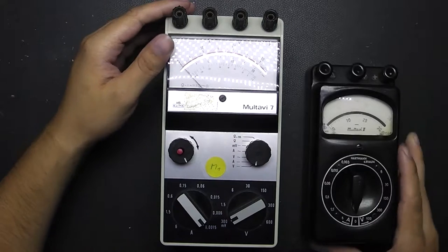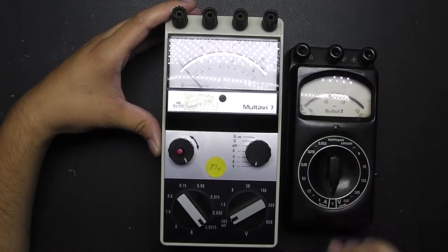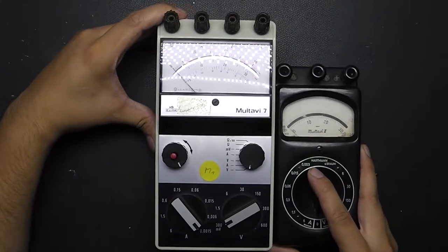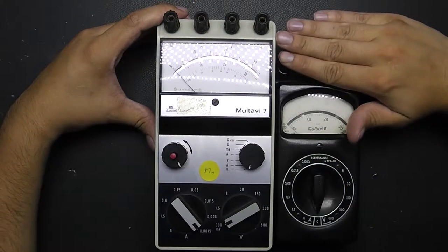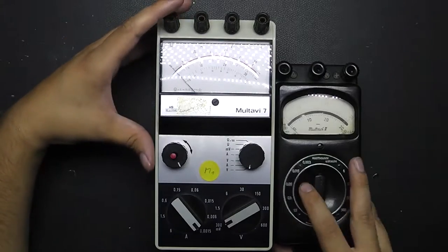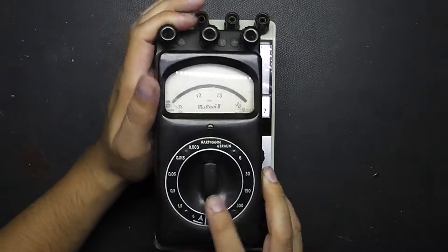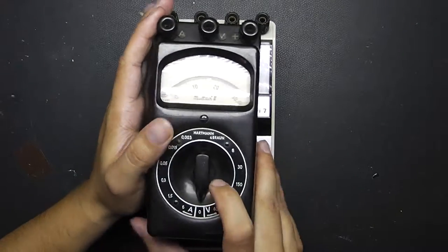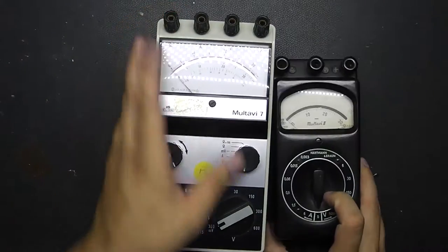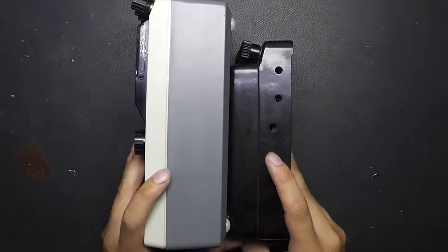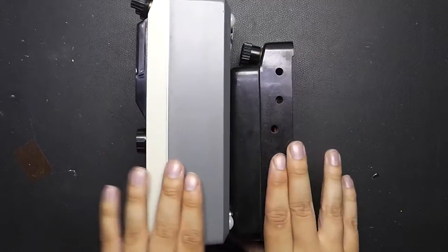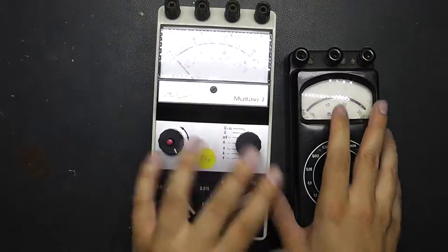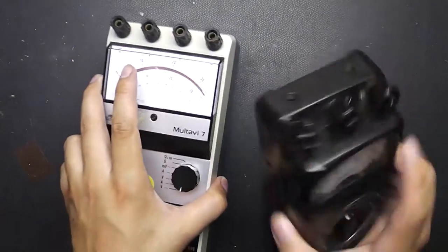Compared to the much older Multavi 2 it is just I would say it's around five centimeters longer and one and a half centimeters more in width but in height it is around the same but it's much lighter than the old one.